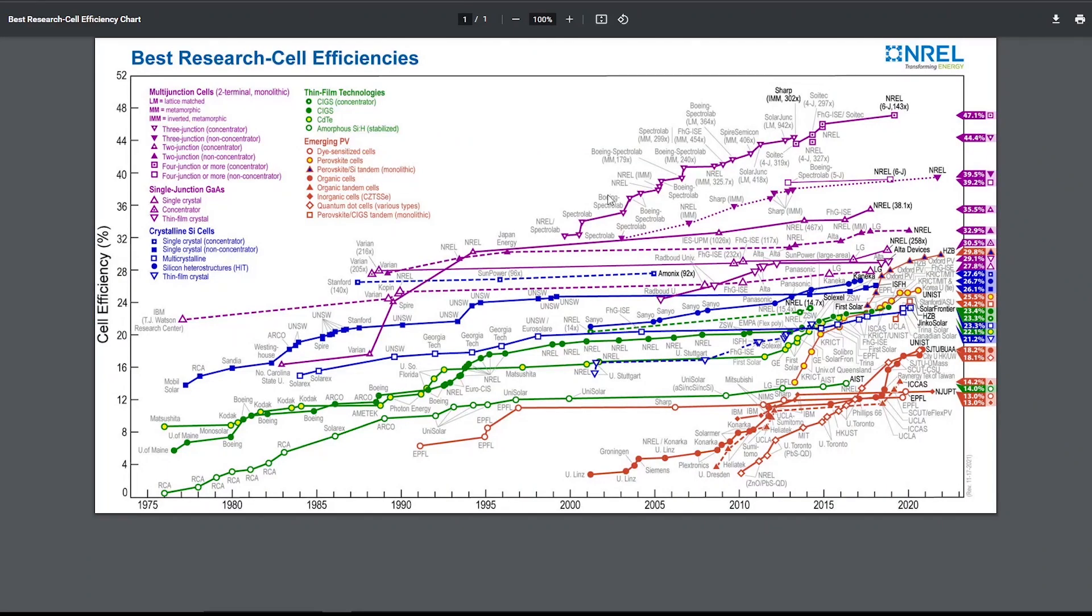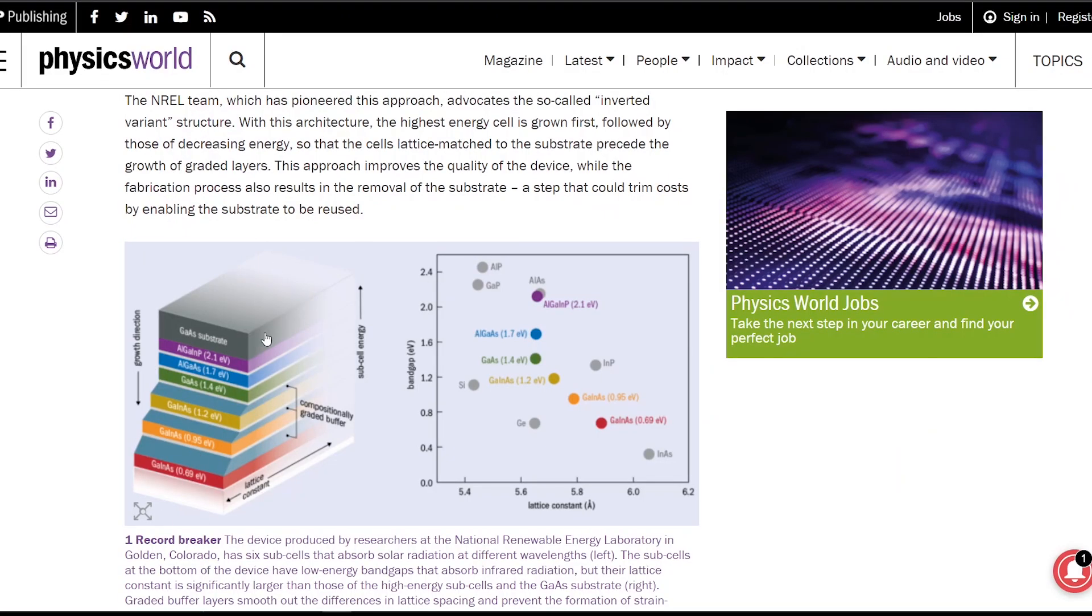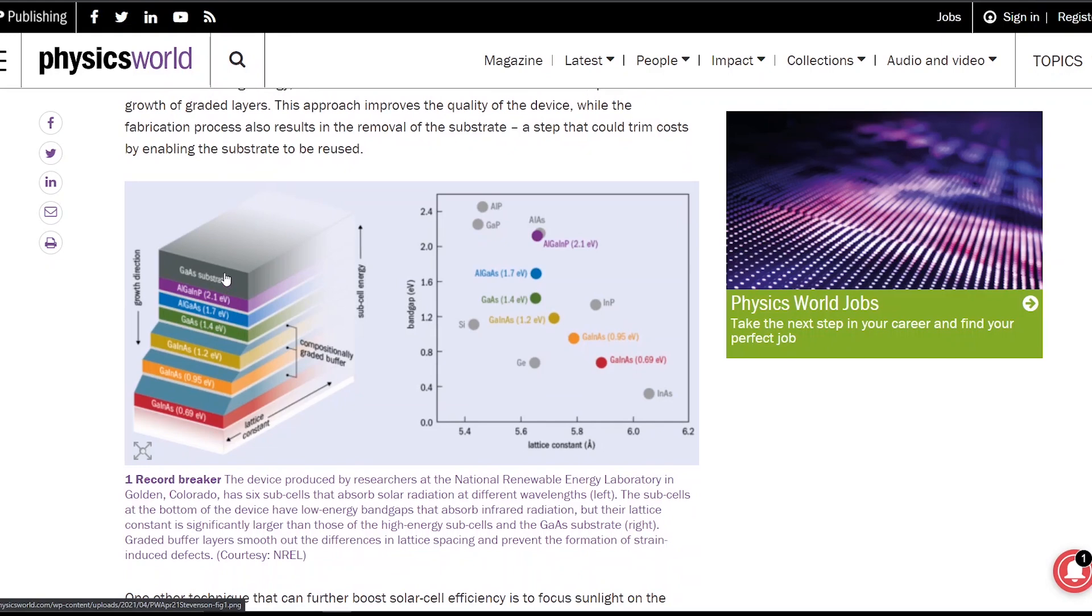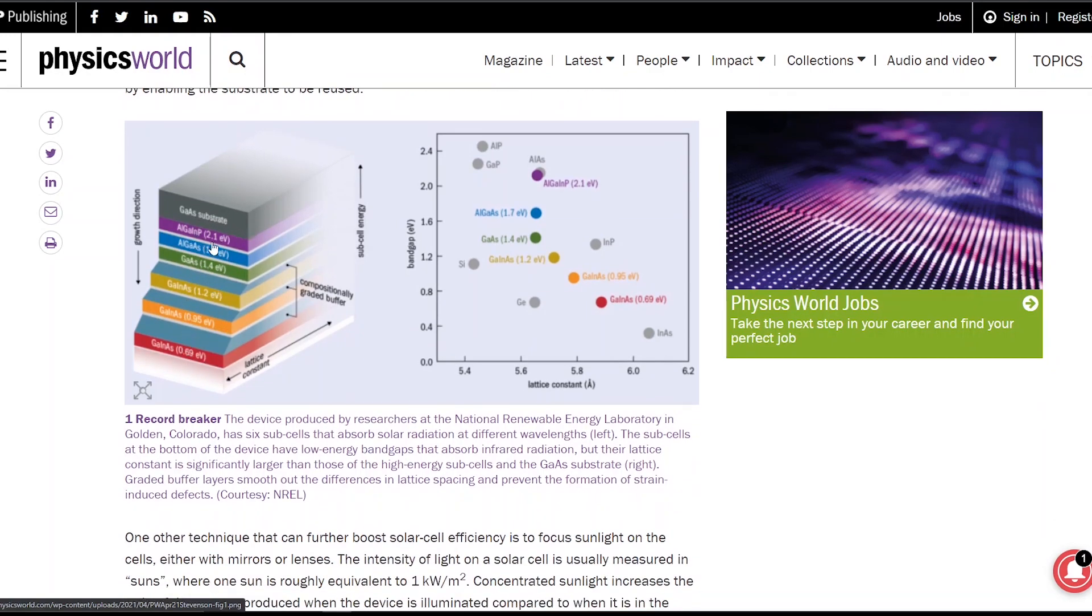Now there is a way to make it to absorb all the different band gaps, and that has to do with if you look at this graph, the most efficient is right here, this thing with the square in the box which is a four junction or more concentrator. They're basically putting a lens on it to concentrate the solar and you get this. Or if you want an unconcentrated one, it's a square box here at 40 percent efficiency. How do they get this? It's called a multi-junction cell.